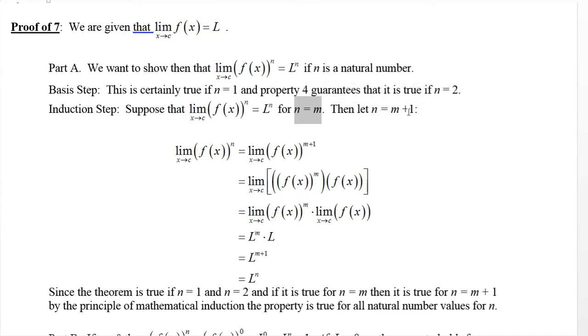And then what you do is you let n be one higher than that, m plus one. So now we want to look at that limit. So we want to do the limit as x approaches c of [f(x)]^n. But n is m plus one. Well [f(x)]^(m+1) is [f(x)]^m times f(x).